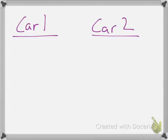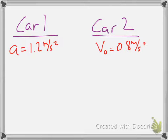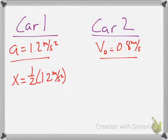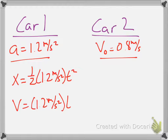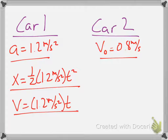Moving on to the next problem with Car 1 and Car 2. Car 1 has an acceleration of 1.2 m/s² and starts from position zero. Car 2 has an initial velocity of 0.8 m/s and an acceleration of zero — constant velocity. The position equation for Car 1 is x = ½ × 1.2 × t², and its velocity equation is v = 1.2t. These come from kinematic equations with v₀ = 0 and x₀ = 0.